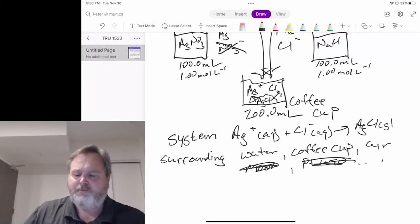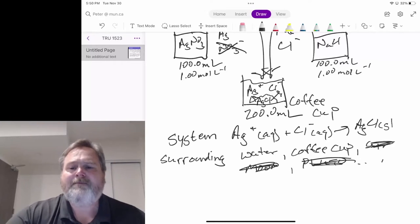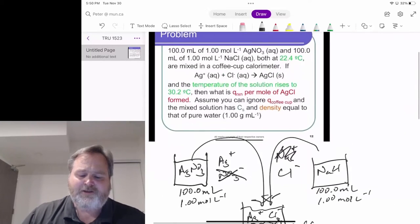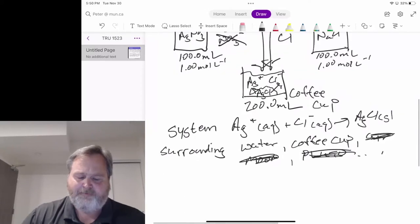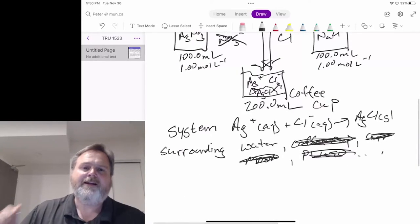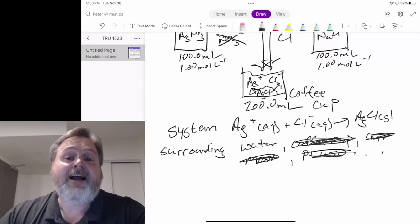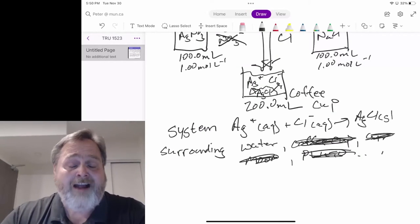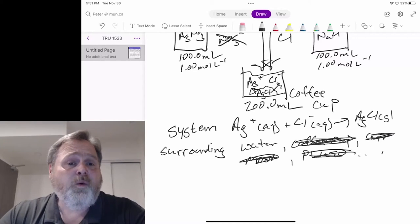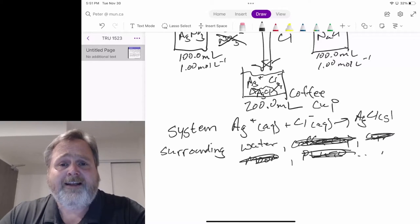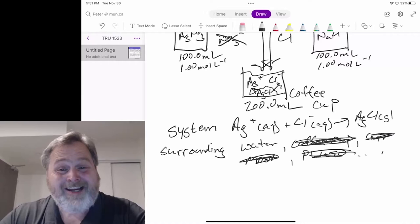We don't have to worry about the moon, the air around it. In fact, we've said let's assume we can ignore however much heat goes into the coffee cup. We have really simplified this problem by saying the surroundings in solution calorimetry is the water that it happens in. Everything else we're going to ignore because we've hopefully got things done quickly enough.